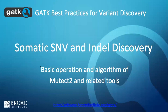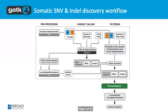Mutect2 is used for inferring somatic variants — variants either in tumor samples — and there are other potential use cases, such as calling mitochondrial variants in mitochondrial DNA, which we're going to have a practical on later.